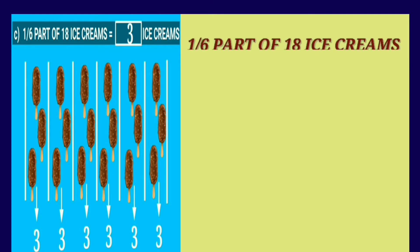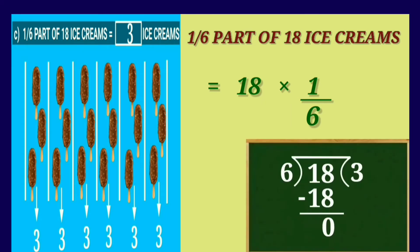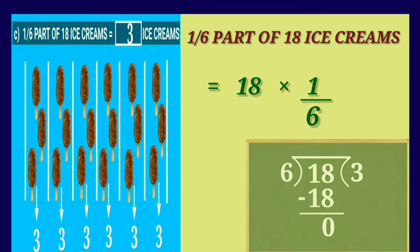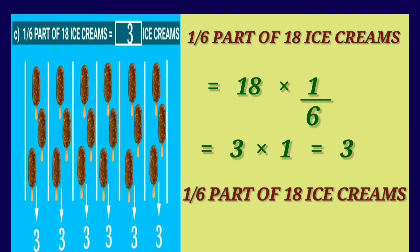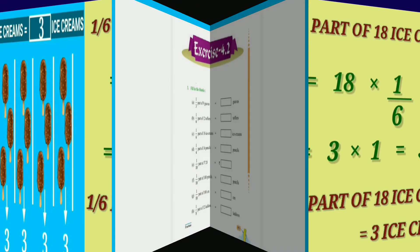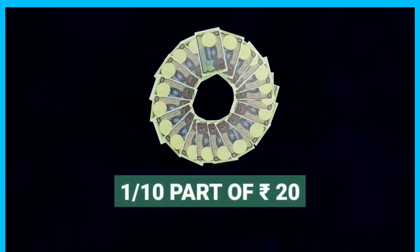Now we'll solve the same fraction using fundamental operations. 1/6 part of 18 ice creams is written as 18 multiplied by 1/6. Dividing 18 by 6 — since 6 times 3 is 18, the quotient is 3. Multiplying 3 by 1 gives 3. Therefore, 1/6 part of 18 ice creams is equal to 3 ice creams.